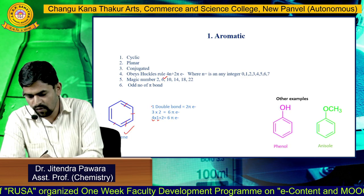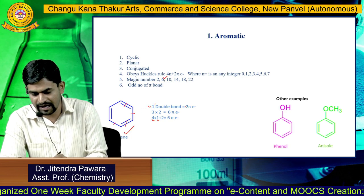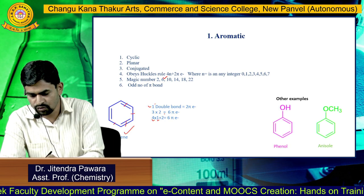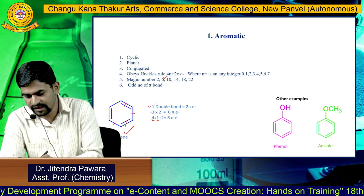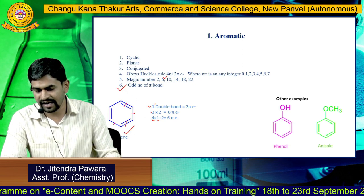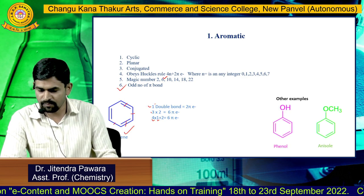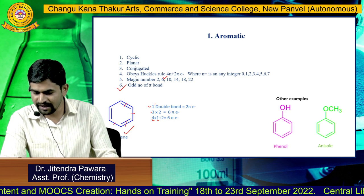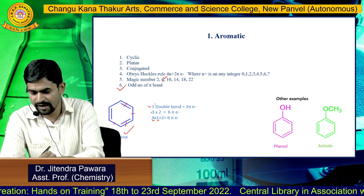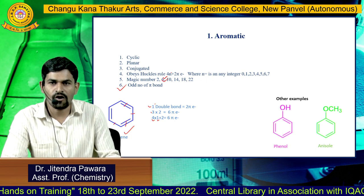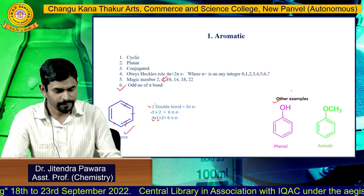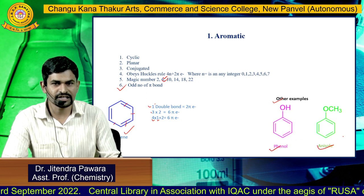One pi bond corresponds to two pi electrons. Benzene has a total of three pi bonds — three into two gives six pi electrons — and three is an odd number. So benzene satisfies all the criteria: it is cyclic, planar, conjugated, obeys Huckel's rule, passes the magic number six, and has an odd number of pi bonds. That's why benzene is an aromatic compound. Some other examples of aromatic compounds are phenol and anisole.